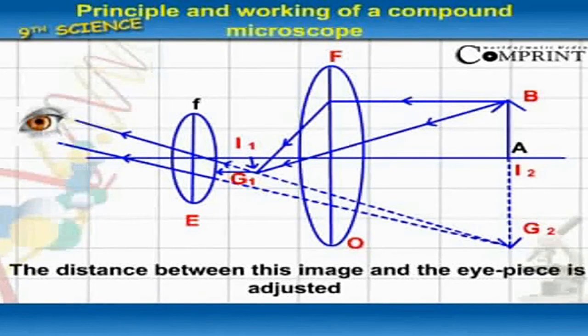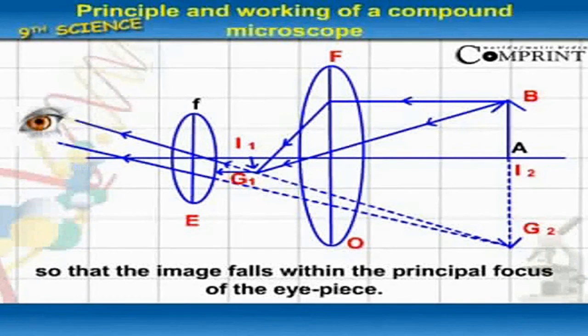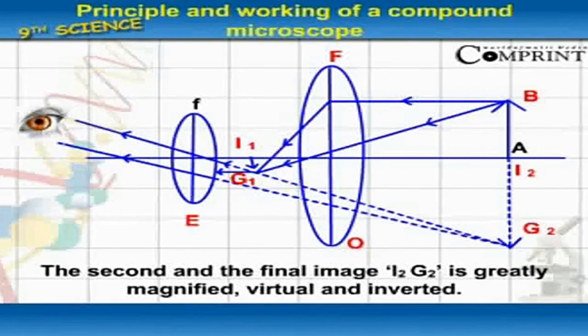The distance between this image and the eyepiece is adjusted so that the image falls within the principal focus of the eyepiece. The second and final image I2G2 is greatly magnified, virtual, and inverted.